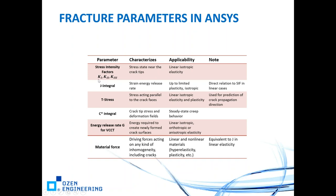Stress intensity factors output from ANSYS are K sub 1, K sub 2, K sub 3 — for mode 1, mode 2, mode 3. They characterize the stress state near the crack tip and are applicable for linear isotropic elasticity. The reason for having so many parameters is that stress intensity factors apply to linear isotropic elasticity, whereas J integral can be done for isotropic plasticity.